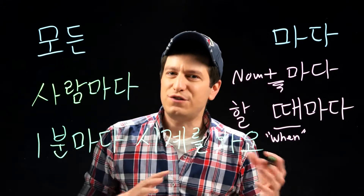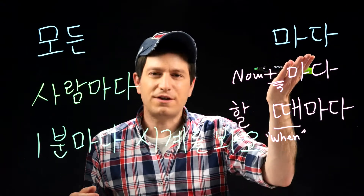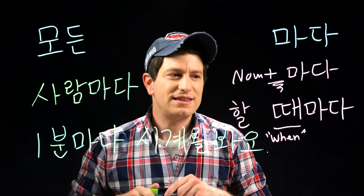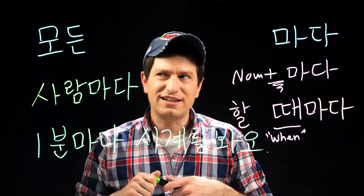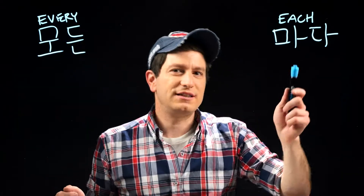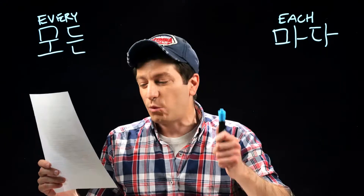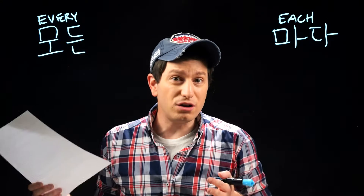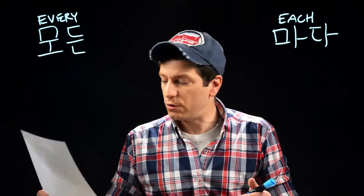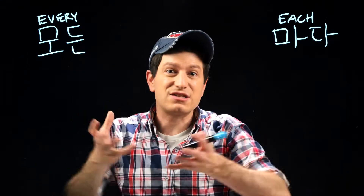This is where a lot of the confusion can happen, because both 모든 and 마다 can translate as 'every'. In fact, it will often sound more natural to translate 마다 as 'every'. To really understand this, we need to go over the difference between 'each' and 'every' in English. 모든 — 'every' — is for talking about multiple nouns or things when you refer to the whole group as one. So 모든 사람 is 'every person', but you're describing every person as one group.